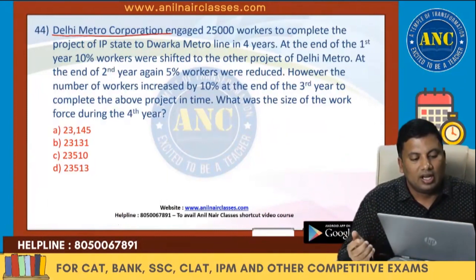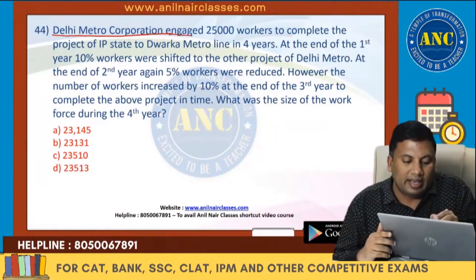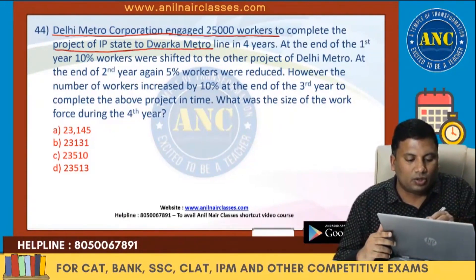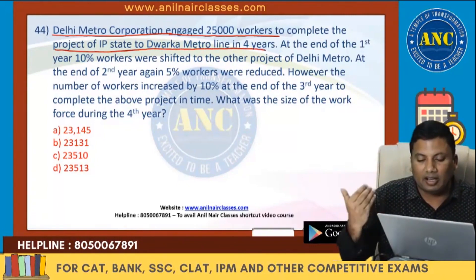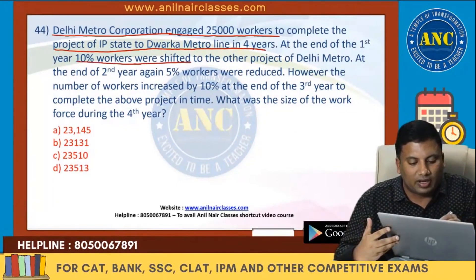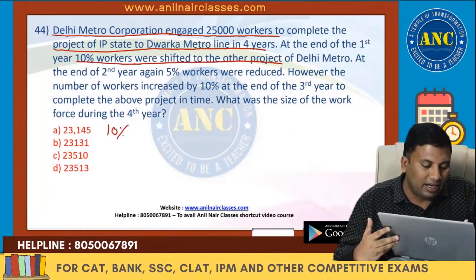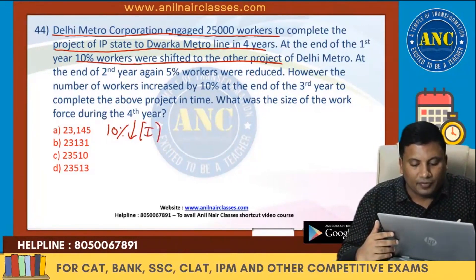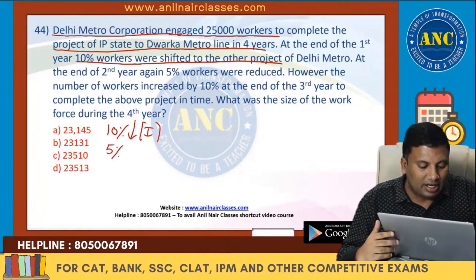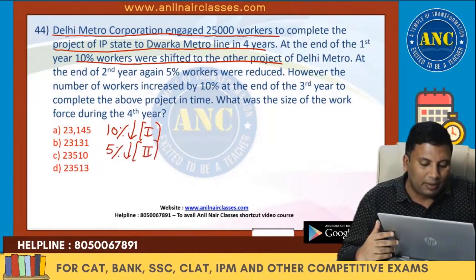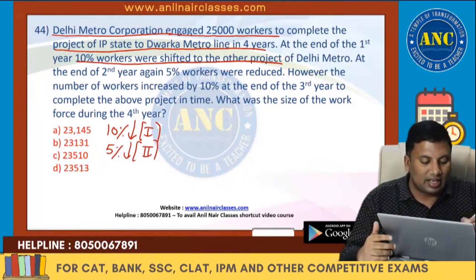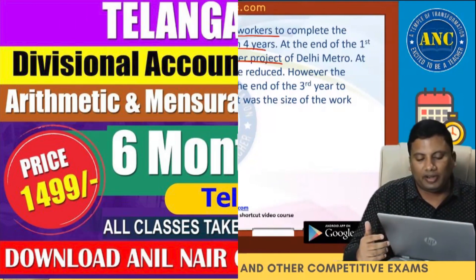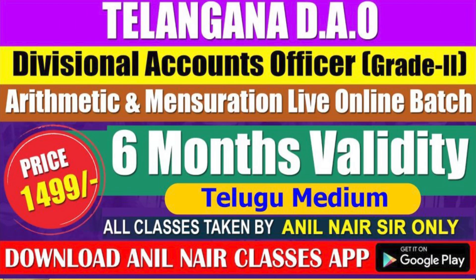Next one — Delhi, again an exam model question. Delhi Metro Corporation engaged 25,000 workers to complete the IP Estate to Dwarka metro line in five years. At the end of year one, 10% of workers were shifted to another project. At the end of year two, 5% were reduced. At the end of year three, the number of workers increased by 10%.